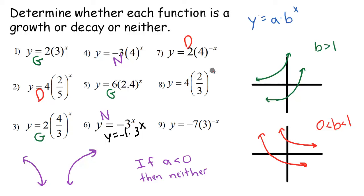Number 8, we have a negative multiplier in front of the x, so again, we do the opposite. Normally, this looks like a decay because we have 2 thirds, but it's going to be a growth.